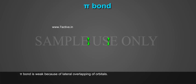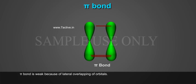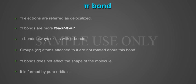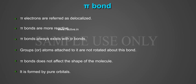Pi bond is weak because of lateral overlapping of orbitals. Pi electrons are referred to as delocalized. Pi bonds are more reactive. Pi bonds always exist with Sigma bonds.